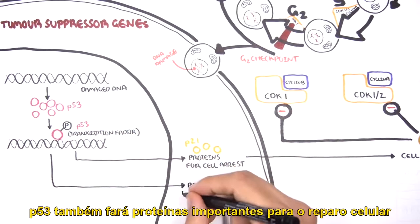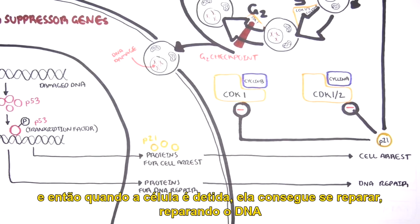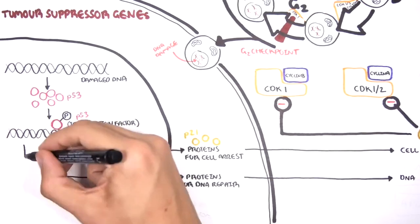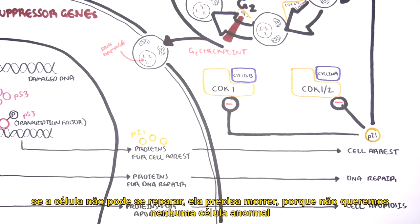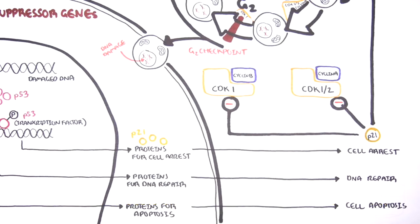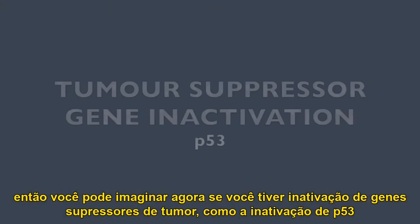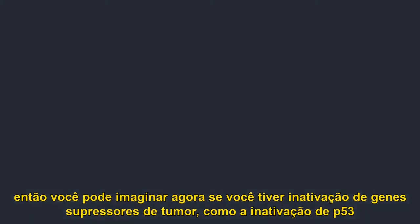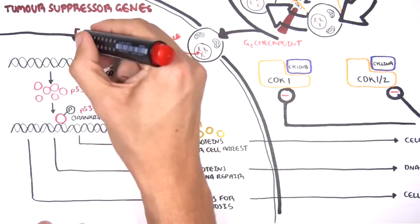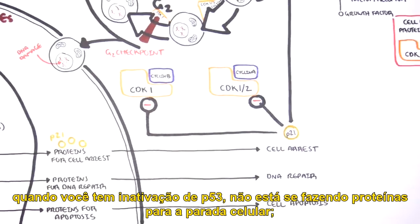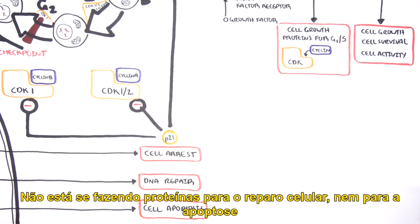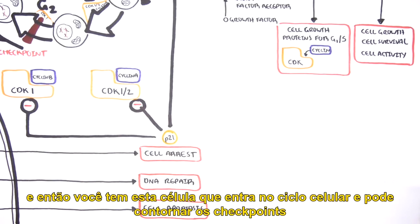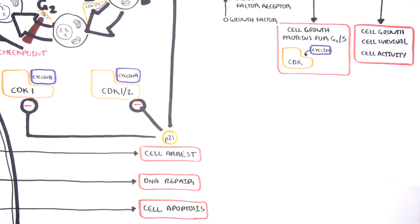p53 will also make proteins important for cell repair, so hopefully when the cell is arrested, it can repair the damaged DNA. The p53 protein will also make proteins important for apoptosis — if the cell cannot repair itself, it has to die, because we don't want any abnormal cells. So you can imagine that if you have inactivation of tumor suppressor genes such as p53, you are not making proteins for cell arrest, not making proteins for cell repair, and not making proteins for apoptosis. The cell then enters the cell cycle, bypasses the checkpoints, and continuously grows and proliferates.